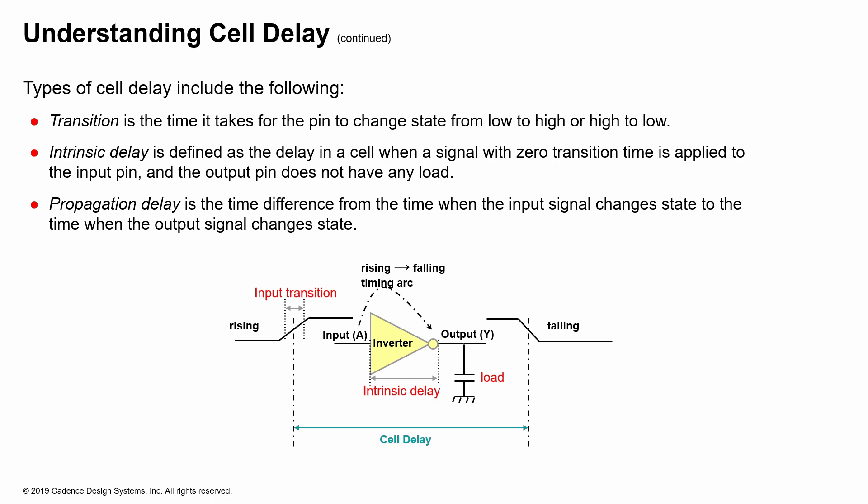And finally, propagation delay is the time difference from the time when the input signal changes state to the time when the output signal changes state. So that whole thing is considered as the propagation delay or the cell delay.